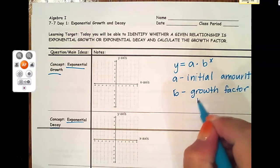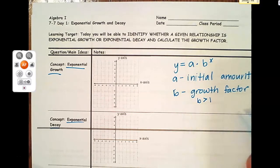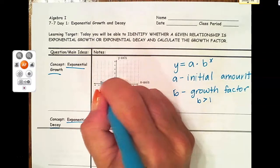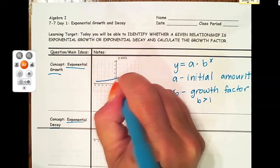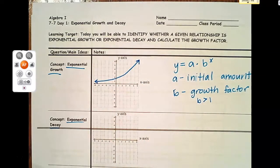When b is greater than 1, that's what makes this a growth formula because it will cause your amount to increase over time. When we graph those, we would expect them to go up, and that's exactly what our graph does.